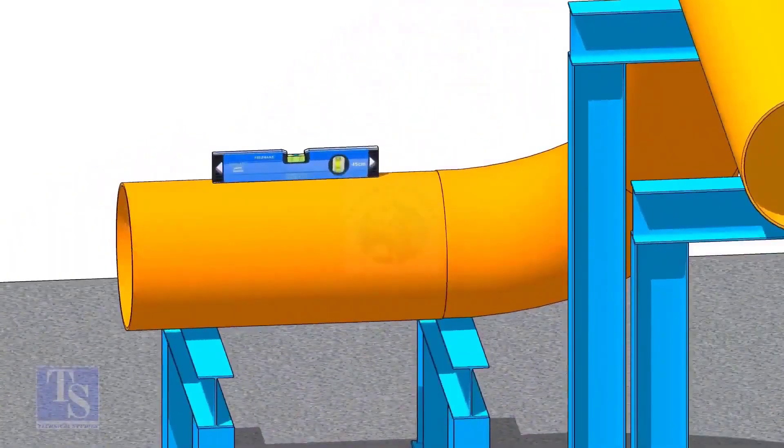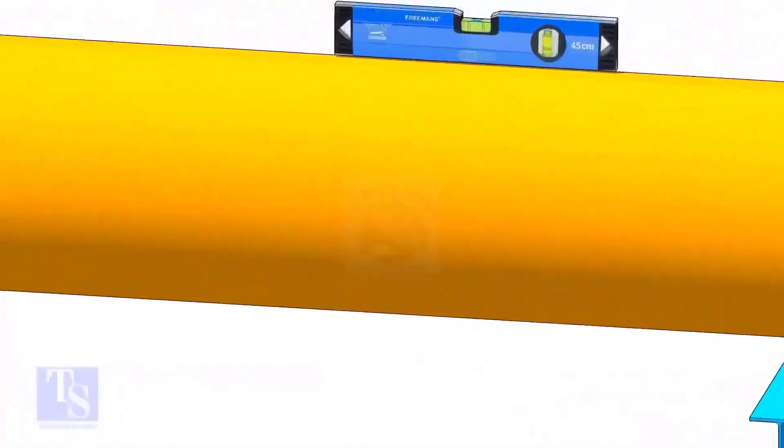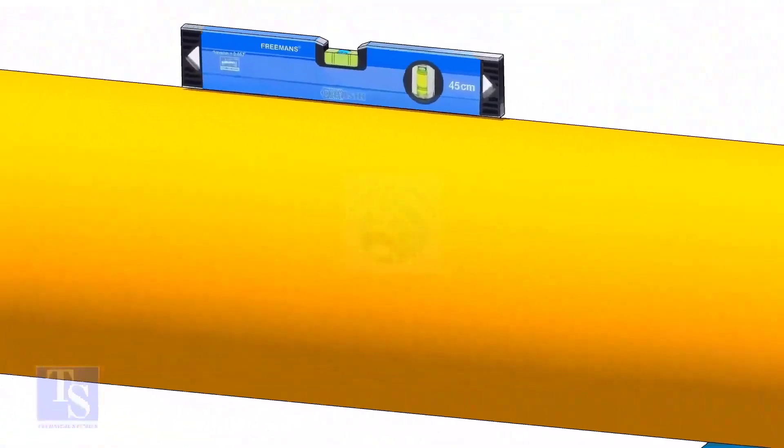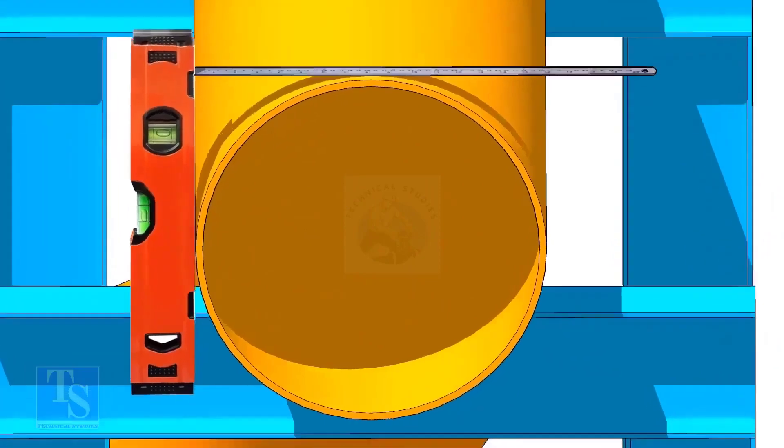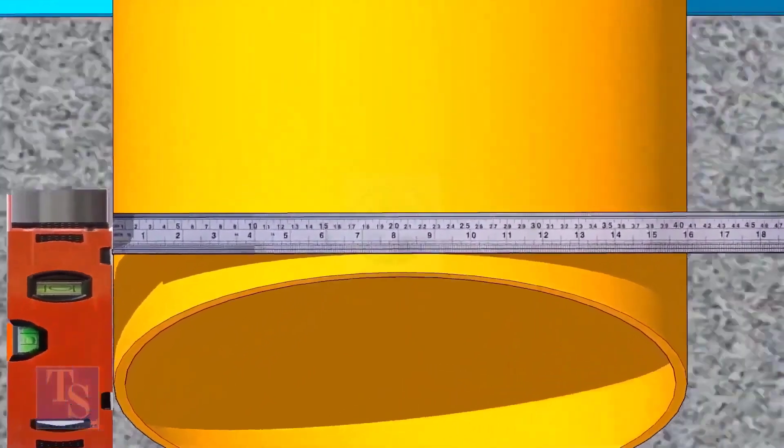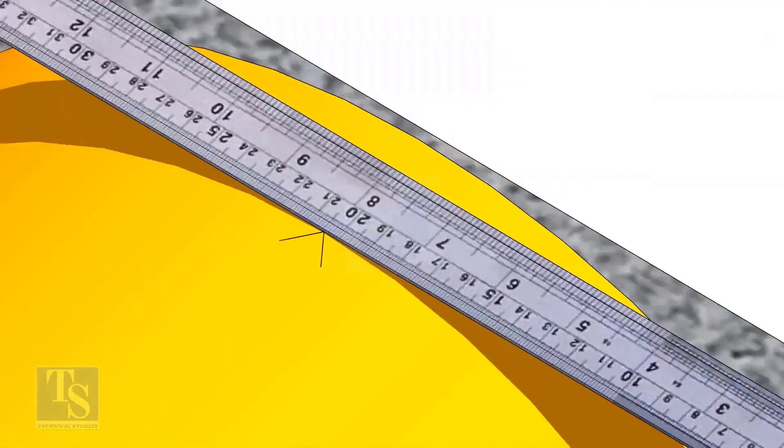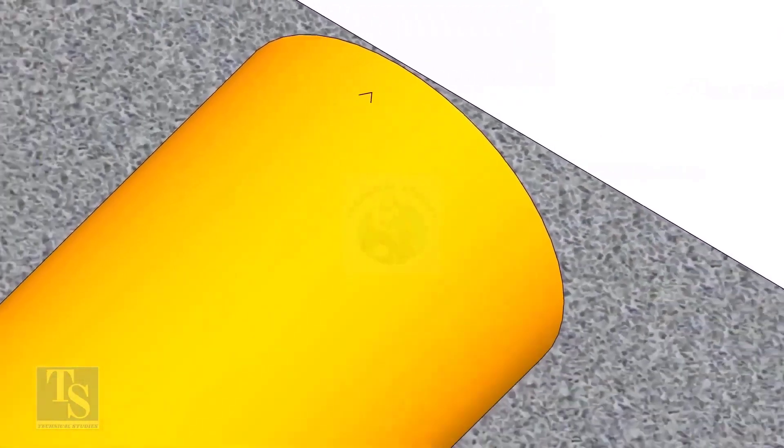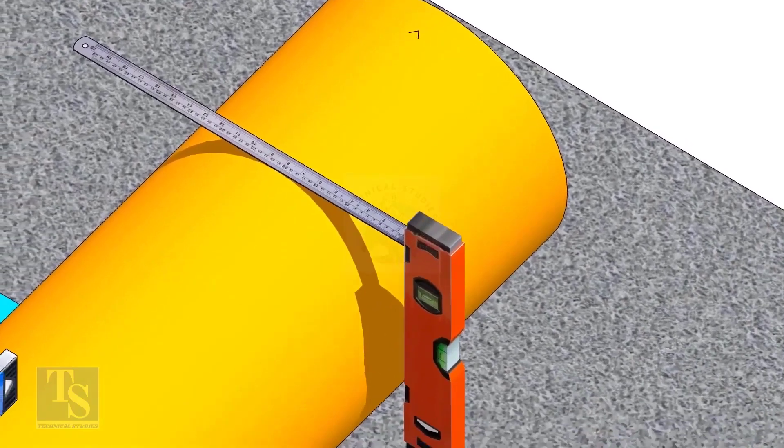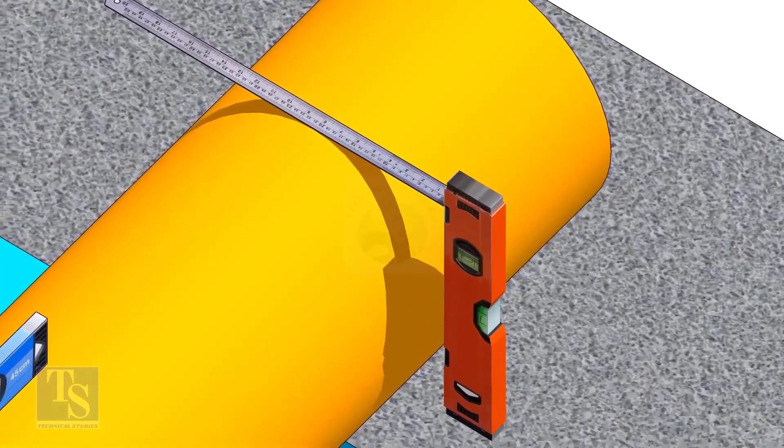After leveling the pipe, mark the center line. Don't forget to punch mark this line. Mark half OD at 300mm apart. This pipe OD is 406mm, so mark 203mm from the vertical level bottle on the top of the pipe. And draw a line connecting these marks.